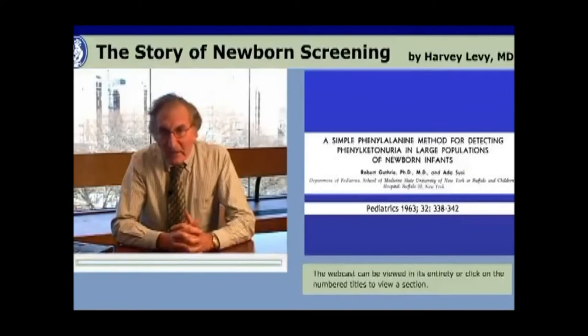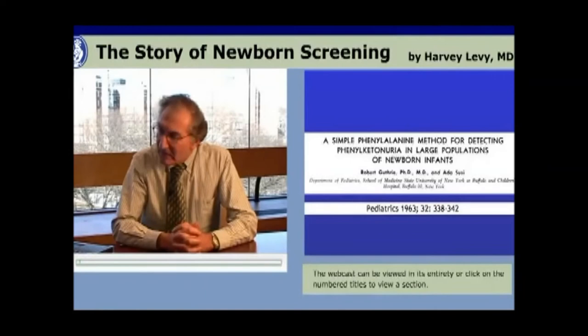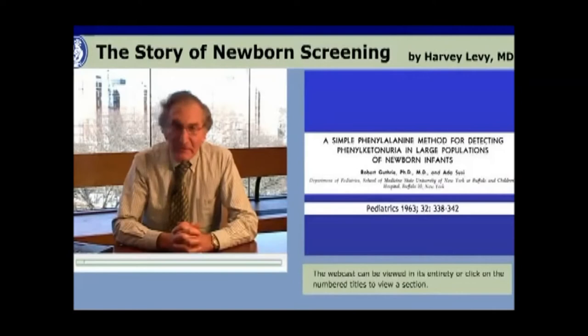In 1963, Guthrie published the assay, calling it 'A Simple Phenylalanine Method for Detecting Phenylketonuria in Large Populations of Newborn Infants.'